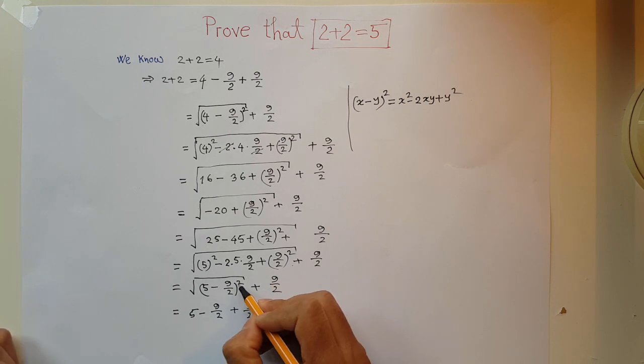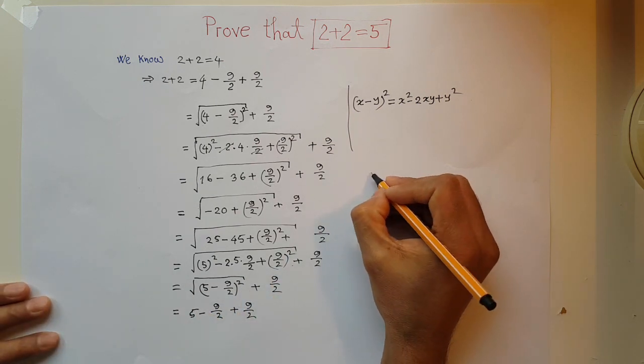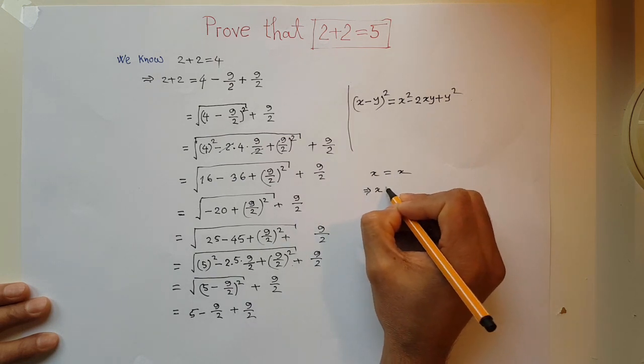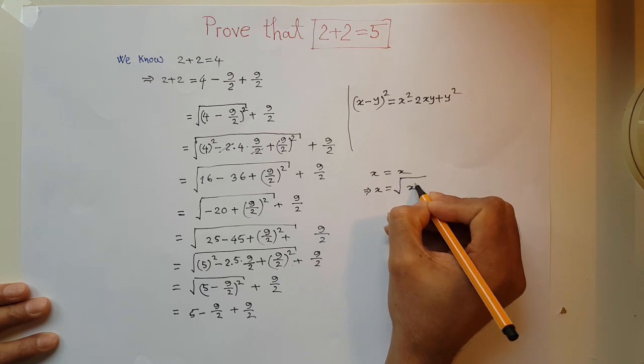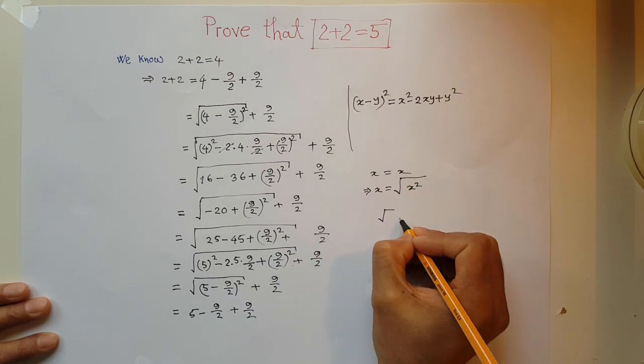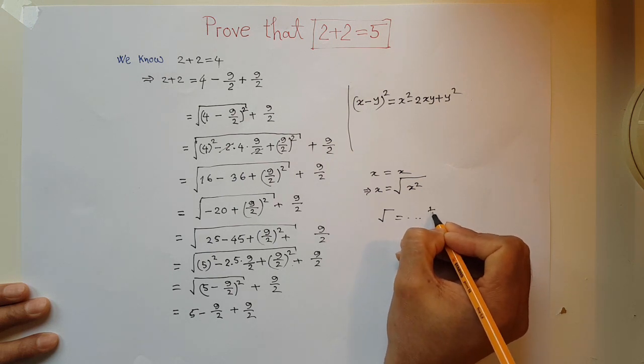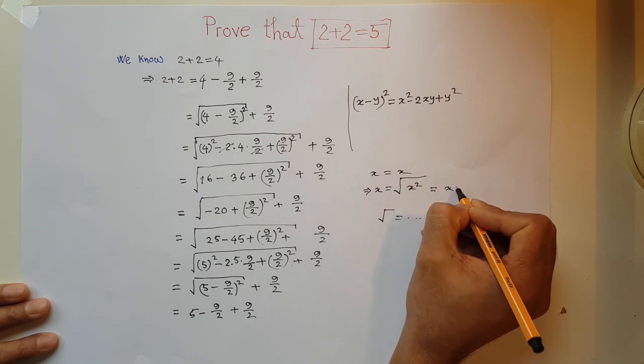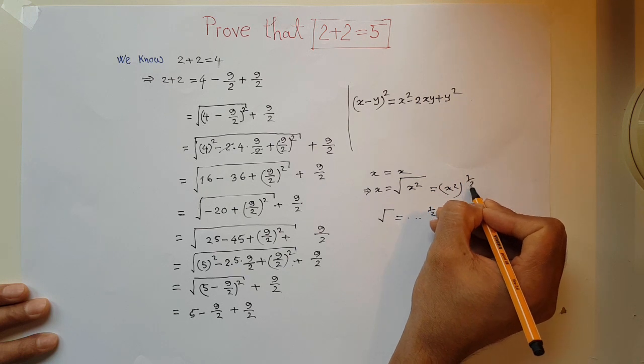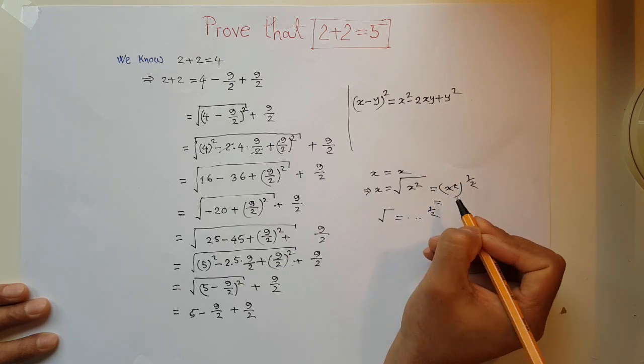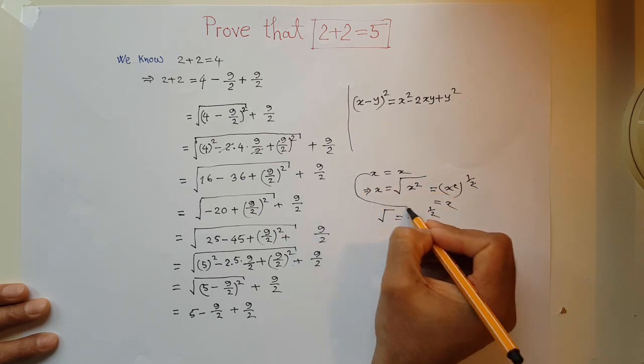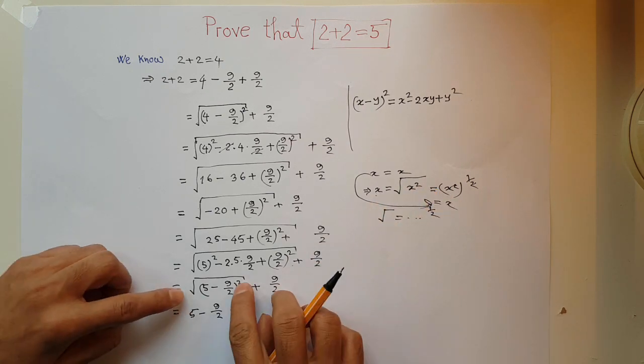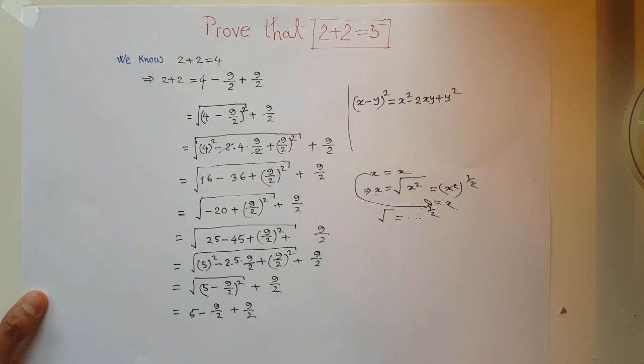You may ask, how do this square and square root remove? We know x equals x. So at this point, I can say x equals square root x square, because square root means something power of half. In this case, x square whole power of half means these two can be eliminated and remaining x. That means x is square root over x square, so square root and square can be eliminated.